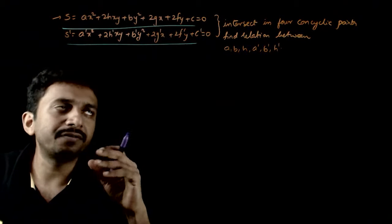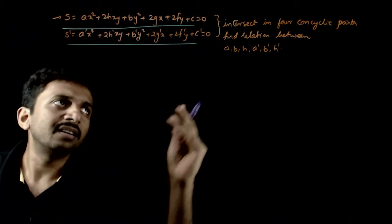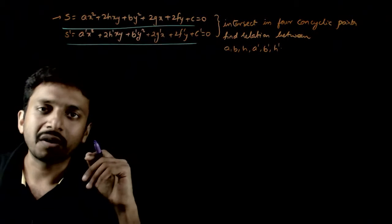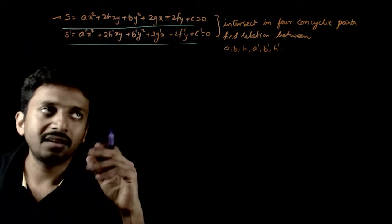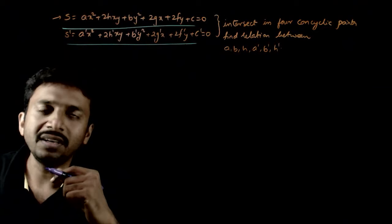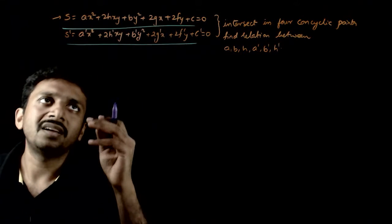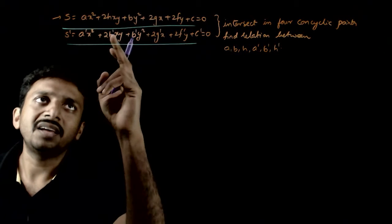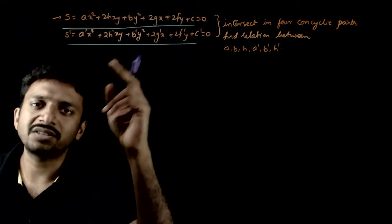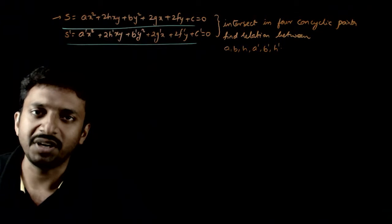It is given that these two curves intersect at four concyclic points. We need to find the relation between A, B, H, A dash, H dash, and B dash.